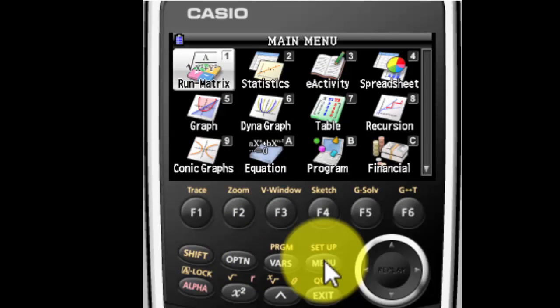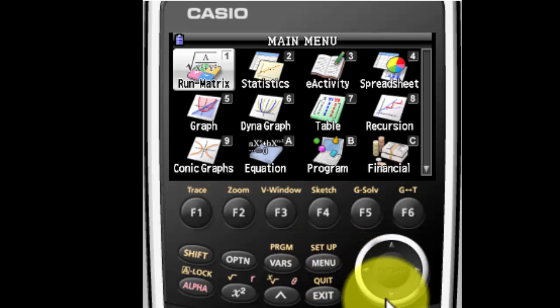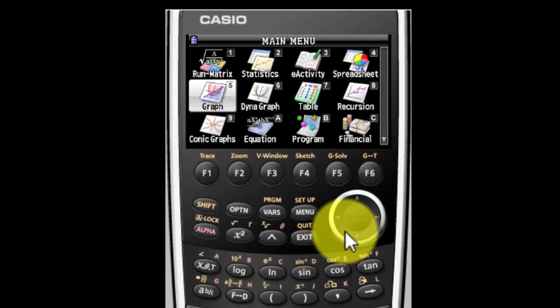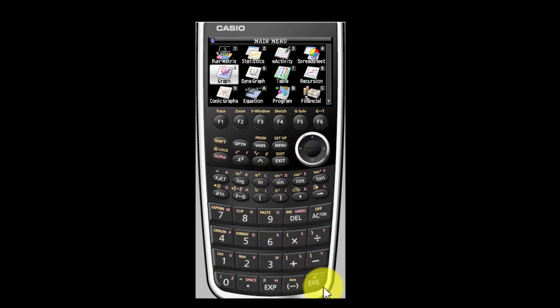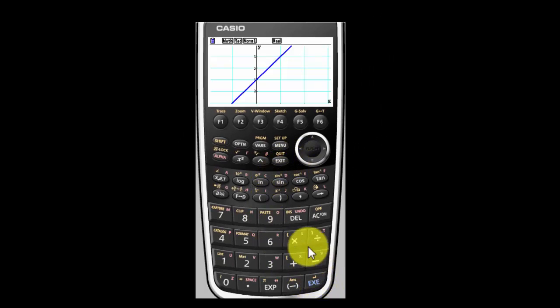That should change it so that you do see this screen. We're going to do some graphing, so we're going to find the word graph. For me, it's number 5. For you, it might be something different. And hit Execute.